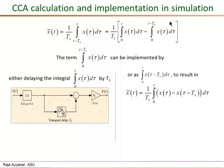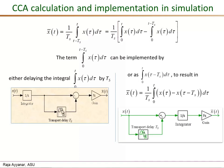That will be the second term of this expression, and that gives us the complete CCA implementation as shown here. The first term is this, and the second one is x of t minus Ts, and both of them are integrated from 0 to t.